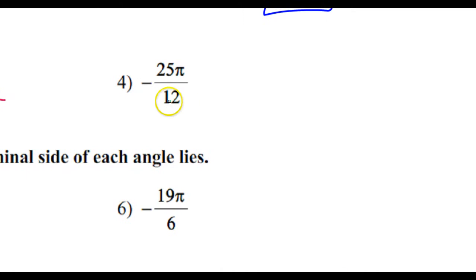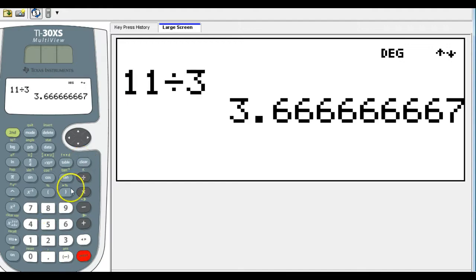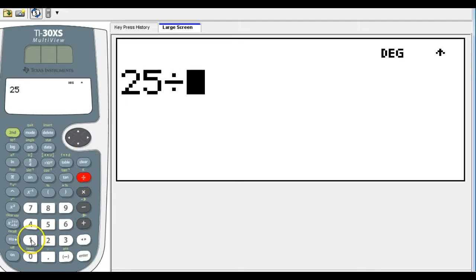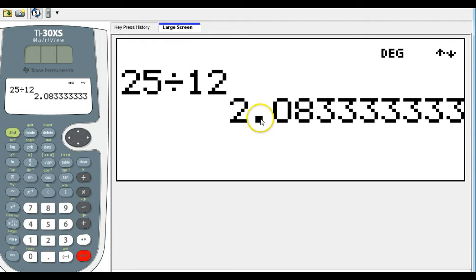Now, 12 is not one of our special angles, so we need to draw a picture and figure out what quadrant it's in and subtract. So look at the numerical part, the coefficient 25/12. Let's turn that into a decimal. 25 divided by 12, that's 2.08, about 2.1.